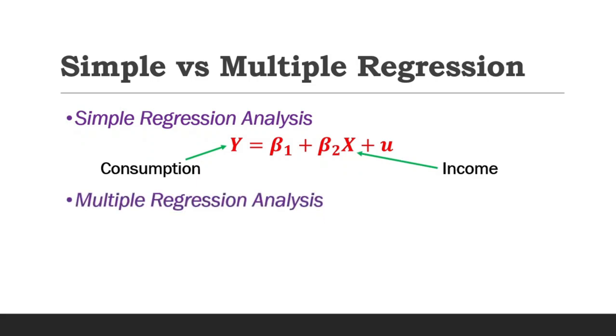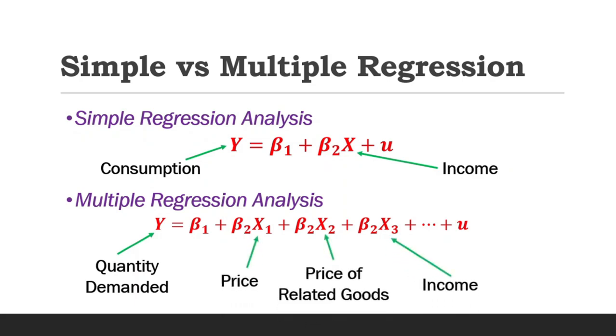With multiple regression analysis, we study the dependence of one variable on more than one explanatory variables. This is a typical econometric model to reflect multiple regression analysis, where we might be interested in studying the dependence of quantity demanded on other factors, such as price, price of related goods, income, and others.